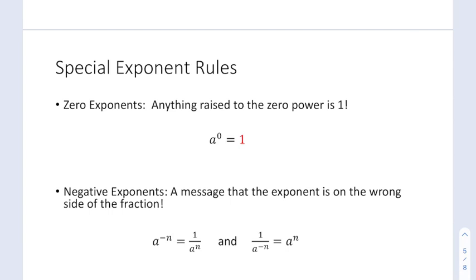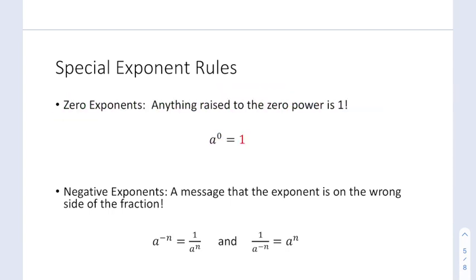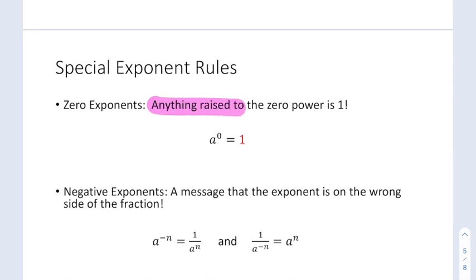This is called the zero property of exponents. It says that anything to the zero power will always equal 1 because you'll see no occurrences of the base in the multiplication chain, but there's always that sneaky 1 left over. So anything to the zero power will always be 1.